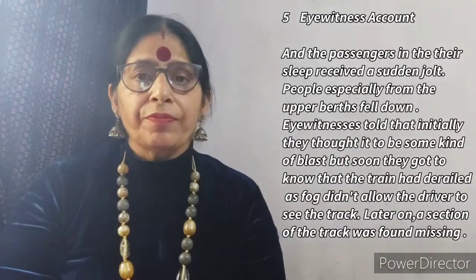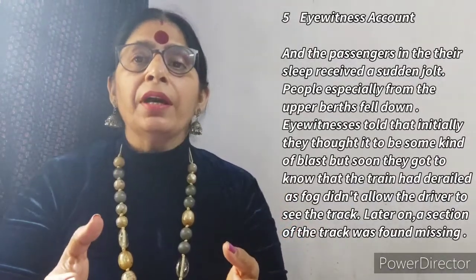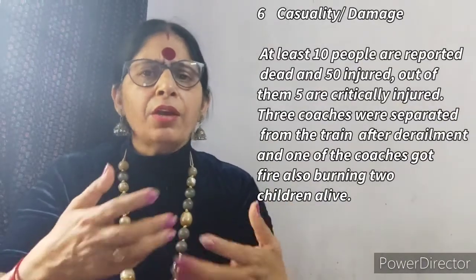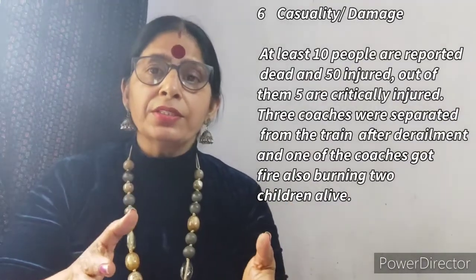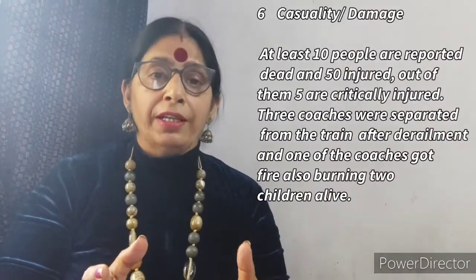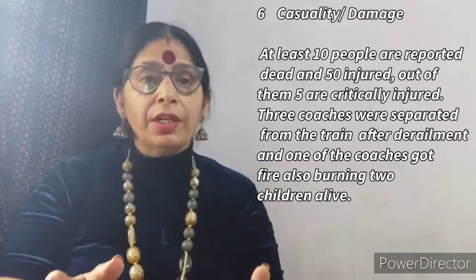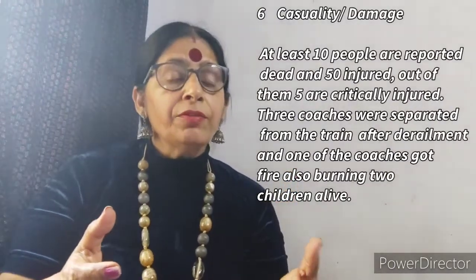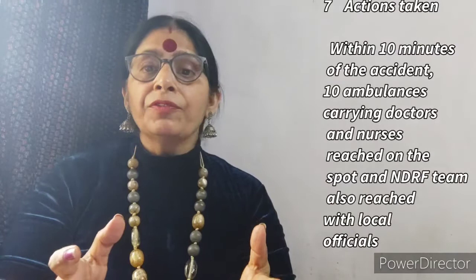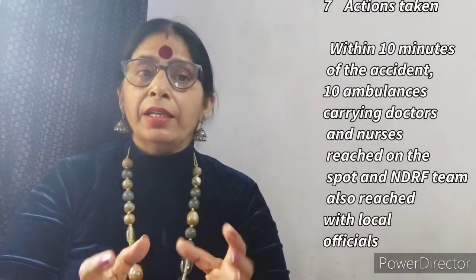The sixth value point is casualty and damage. For example: 'At least 10 people are reported dead and 50 injured, out of whom five are critically injured. Three coaches were separated from the train after derailment and one of the coaches caught fire, burning two children alive.' For the seventh value point — action plan — you write: 'Within 10 minutes of the accident, 10 ambulances reached the spot along with local officials.'